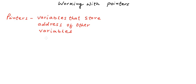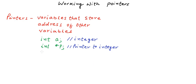Pointers are variables that store the address of other variables. We declare a normal variable with a syntax like the data type followed by the variable name. But we declare a pointer variable with a syntax of the data type, an asterisk sign, followed by the variable name. We need an integer pointer variable to store the address of an integer. To store the address of, say, a character variable, we will need a character pointer.